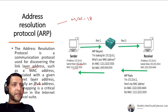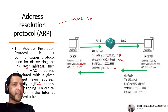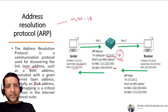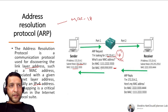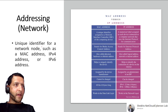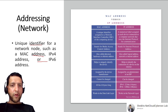In an ARP request, the sender broadcasts asking who has a specific IP address. The receiver with that IP replies with its MAC address. Others simply ignore the message. The sender then stores this mapping. When you send an ARP request, you are saying: 'I know your IP — please give me your MAC so I can build a frame to reach you.'